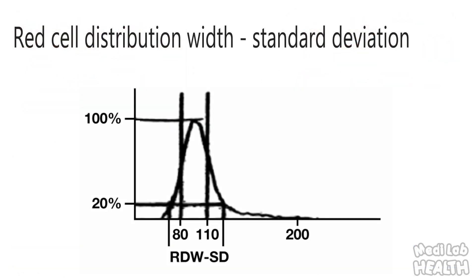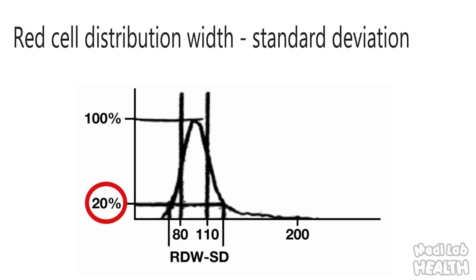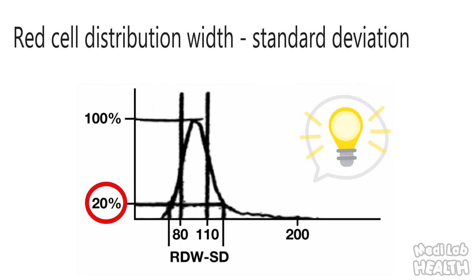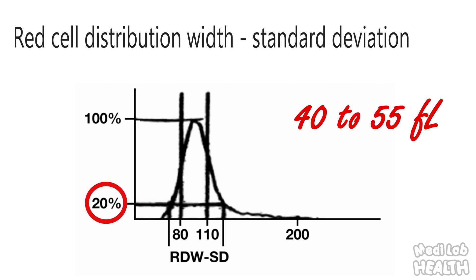The red cell distribution width standard deviation is an actual measurement of the width of the red cell distribution curve in femtoliters. The width of the distribution curve is measured at the point that is 20% above the baseline. Since the RDW-SD is an actual measurement, it is not influenced by the MCV and more accurately reflects red cell size variance. The normal RDW-SD range for adults is 40 to 55 femtoliters.